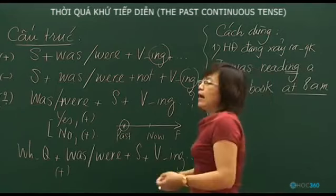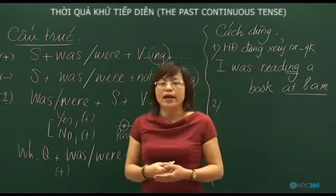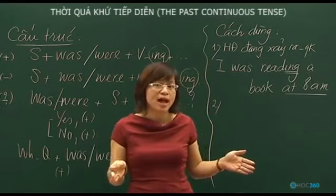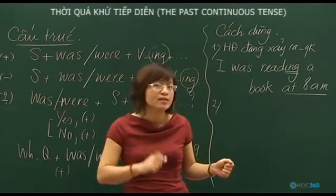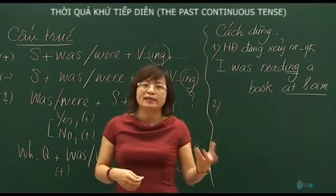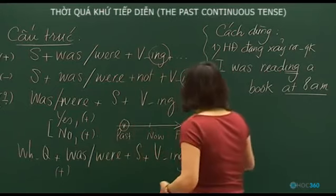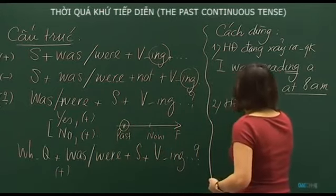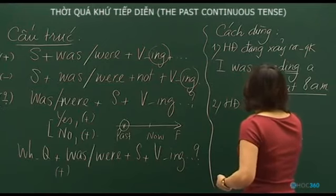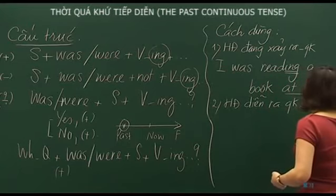Usage 2: The past continuous can also describe an action that was happening over a relatively long period of time in the past. Note that this is still in the past. For example, all of yesterday or all of last month — what were you doing?